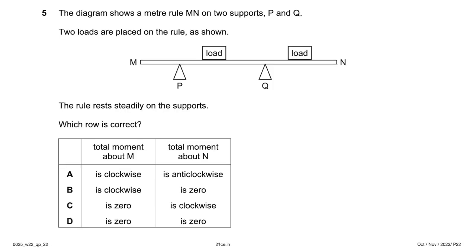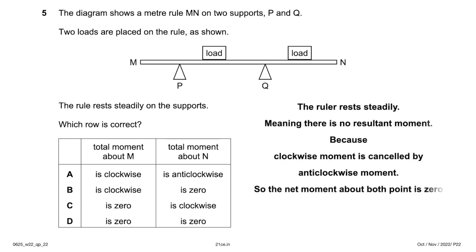The diagram shows a meter rule on two supports P and Q with two loads. The rule is steady, meaning it is in equilibrium — so there is no resultant moment. The clockwise moment is cancelled by the anti-clockwise moment, making the net moment about both points zero. Option D (both zero) is correct. If there were a net clockwise moment about both, it would oscillate, but it is at rest.